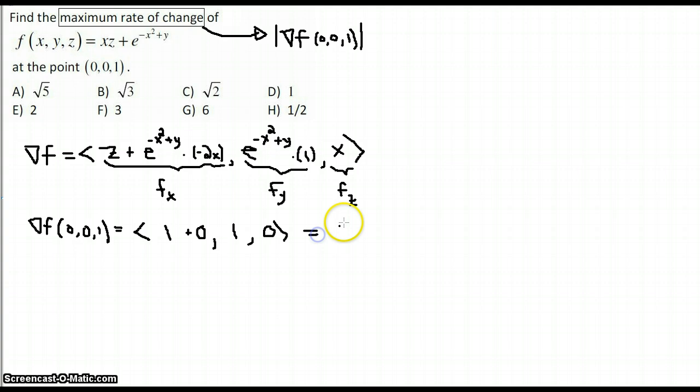So that's (1,1,0). That's the gradient at that point, and it will be the direction of the maximum rate of change. The actual value of the maximum rate of change is the magnitude of that vector, which is the square root of 2. And that is your answer.